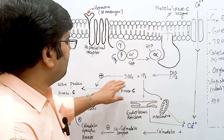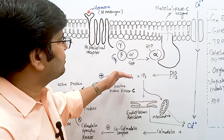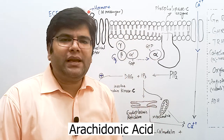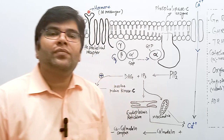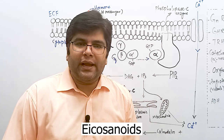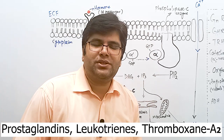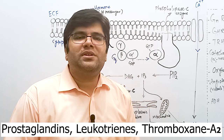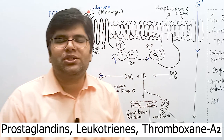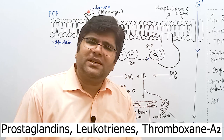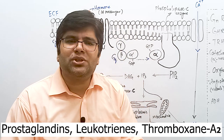Moreover, some fatty acids from DAG that remain in the cell membrane are arachidonic acid. Arachidonic acid is an important precursor for substances called eicosanoids — for example, prostaglandins, leukotrienes, and thromboxane A2. These substances perform their actions locally. Thromboxane A2 causes aggregation of platelets, leukotrienes cause constriction of the bronchus and are important in the pathophysiology of asthma, and prostaglandins can cause vasodilation or vasoconstriction in different tissues.